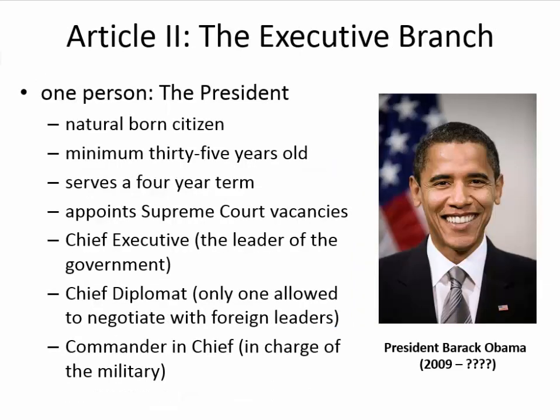Article 2 addresses the executive branch — one person, the president of the United States. The president has to be a natural-born citizen, born in the United States. You have to be a minimum of 35 years old. It is a four-year term. The president appoints Supreme Court vacancies — if someone retires or, since it's a lifetime term, serves until death, the president fills that vacancy. The president is considered chief executive, chief diplomat — the only one allowed to negotiate with foreign leaders and sign treaties — and commander in chief of the military.